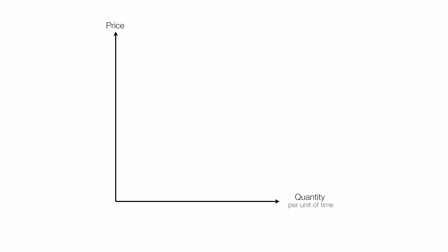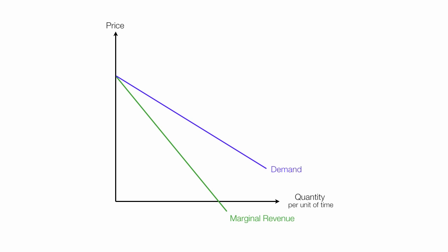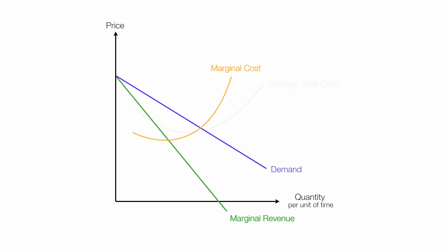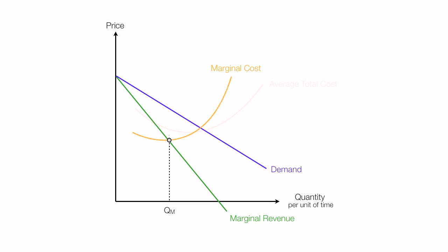The marginal cost curves look something like this with a downward sloping demand curve. Remember, the monopoly's demand curve is the market demand curve, along with the marginal revenue curve. I'll draw in the marginal cost curve and the average total cost curve. The monopolist produces where marginal cost is equal to marginal revenue at a quantity I call QM — the quantity produced for the monopoly. And they charge a price PM.